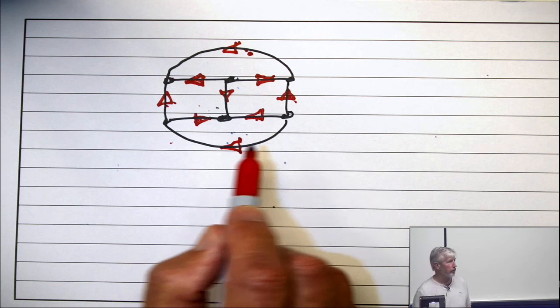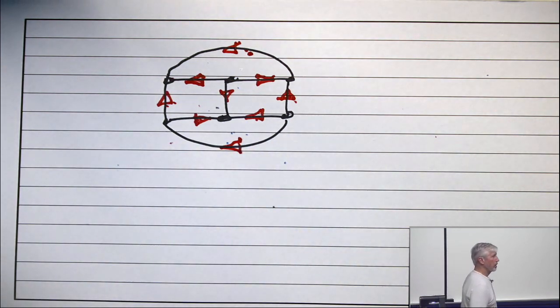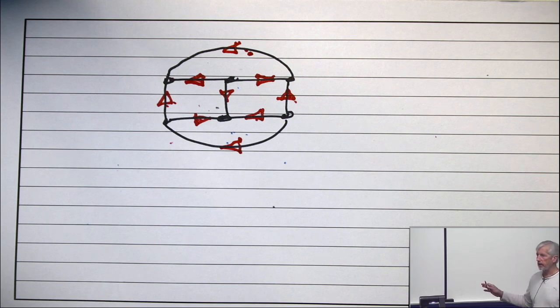Alright, so we now have all edges forced. We made one choice and that one choice spawned out and forced everything.